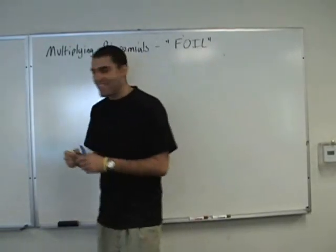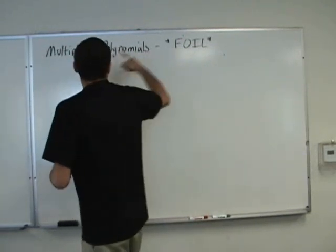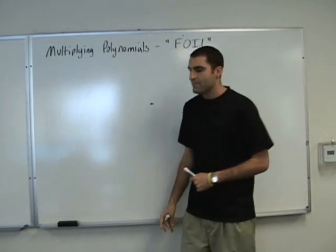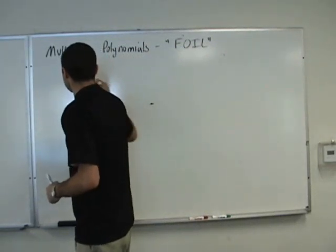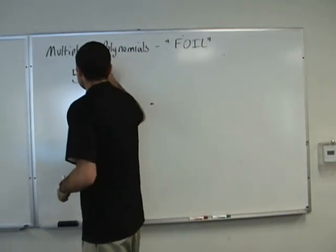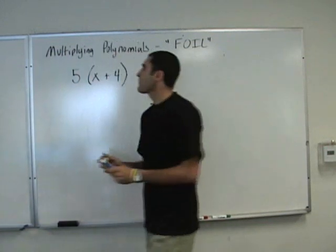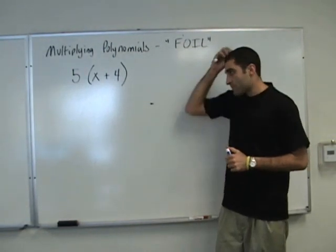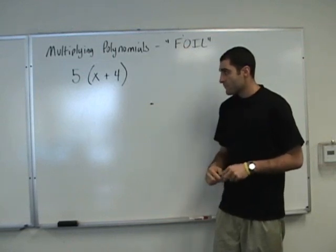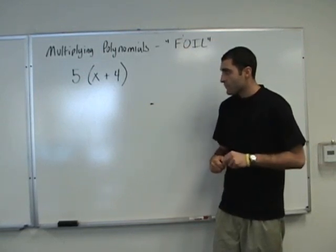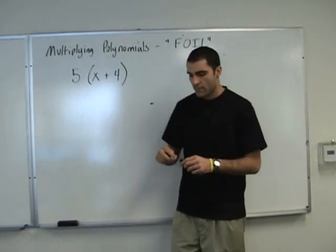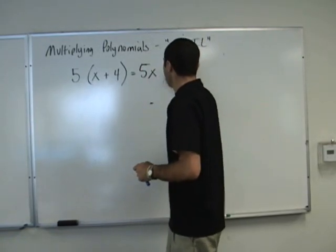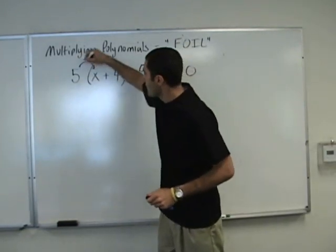Multiplying polynomials is the same as the distributive property, except it's a distributive property party. So if you could please write the following. Who can distribute this? 5x plus 20. That was a brief intro on distributive property.